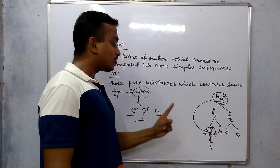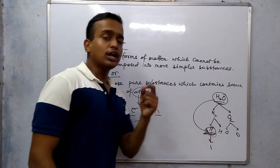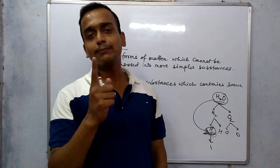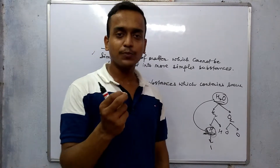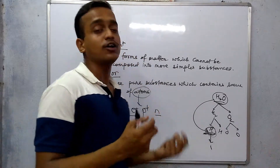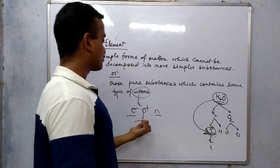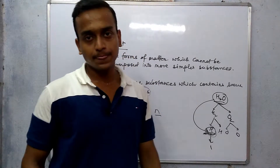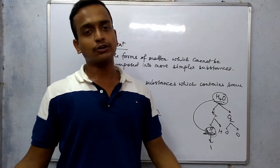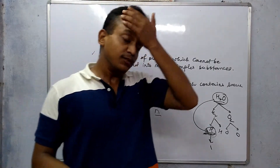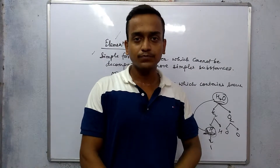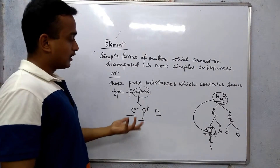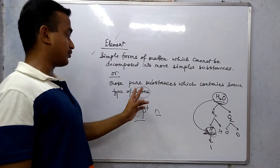The smallest particle of the element is the atom. Electron, proton, and neutron — you can say those are the smallest particles of matter, but I am saying element. Atoms are the smallest particle of an element. An electron or proton can belong to any element — you can't say. That's why atom is the smallest particle of an element.